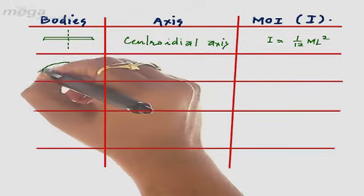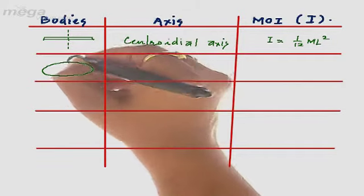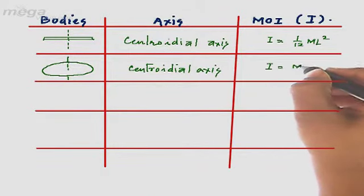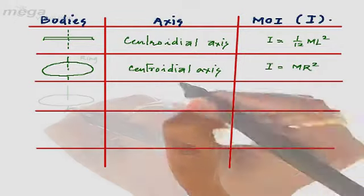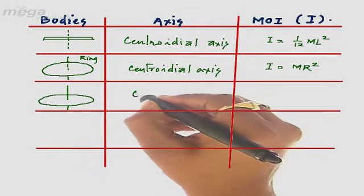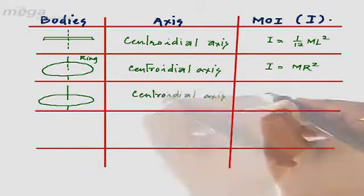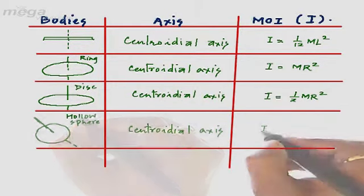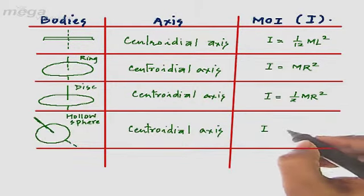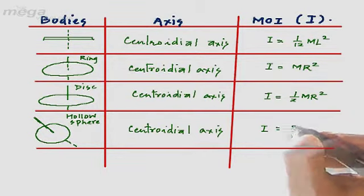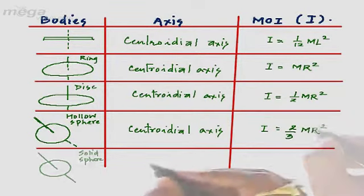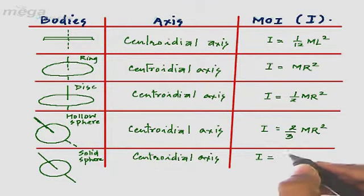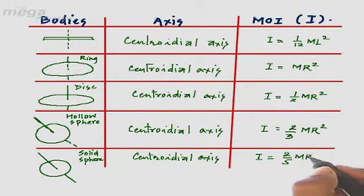The moment of inertia of a ring about the centroidal axis is mR square, where R is the radius of the ring. Taking a disk, the moment of inertia along the centroidal axis will be 1/2 mR square. Taking a hollow sphere, the moment of inertia along the centroidal axis will be 2/3 mR square. For a solid sphere, the moment of inertia will be 2/5 mR square.